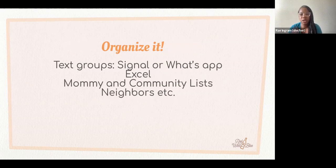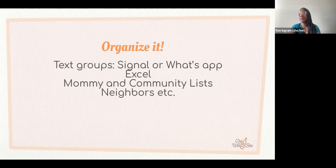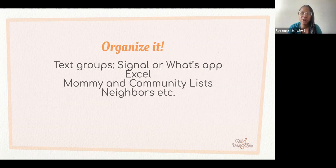When I'm doing my own data dump I use a simple Google Sheet or Excel, which I shared with you earlier — a simple template you can use to start building your network with some basic fields. Think about mommy and community lists too. My child isn't in school yet, but when she is there'll be parent lists and all those things. Even if you're in a homeowner's association, think about where you can find information to reach people you want to engage on issues you care about or programs that Red Wine and Blue is doing.